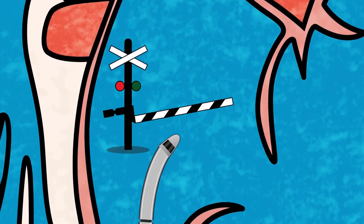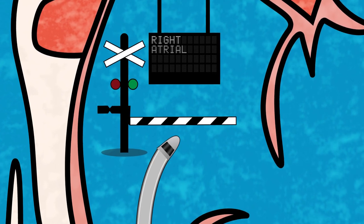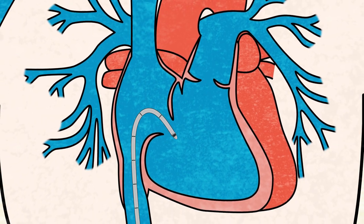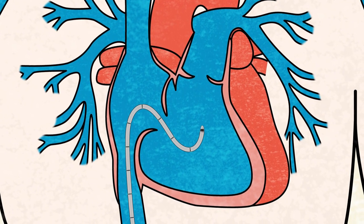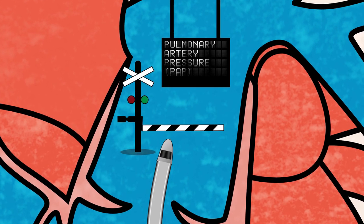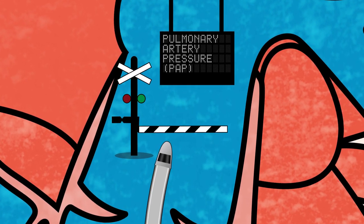The first stop is the right atrium where the lead car will collect the right atrial pressure. The catheter train continues to navigate its way through the right ventricle and into the pulmonary artery, another location where a valuable pressure is obtained.